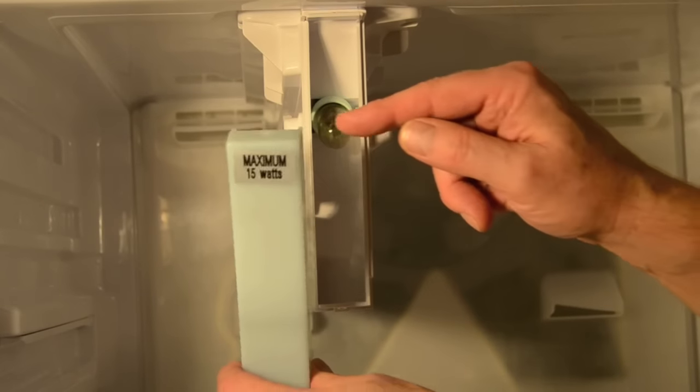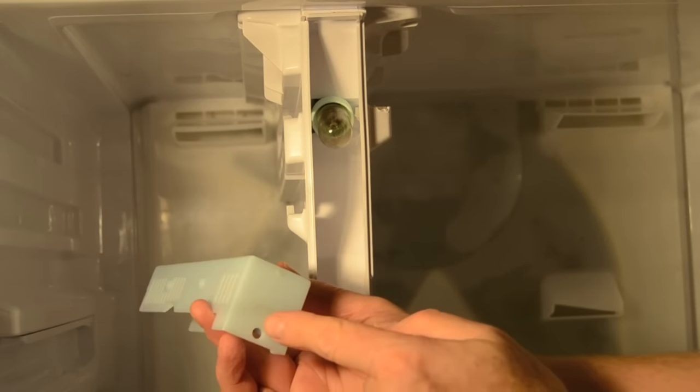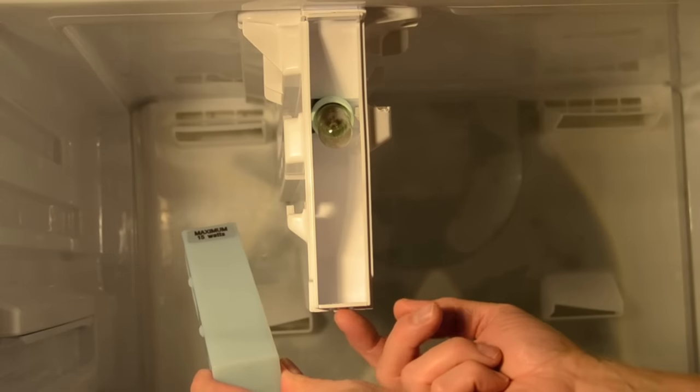Reattach the freezer light cover. The small hole in the top fits into a tab. Put the top in first, then snap the bottom tab into place.